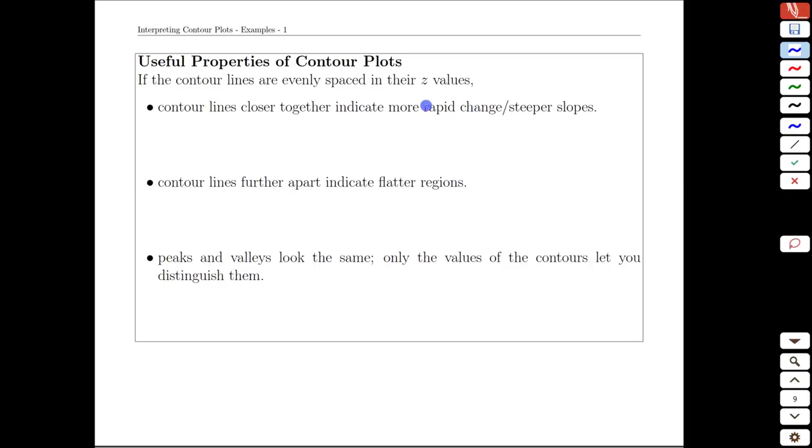With that caveat in mind, which is typical or standard practice, what we can then determine is that contour lines that are closer together indicate more rapid change or steeper slopes.